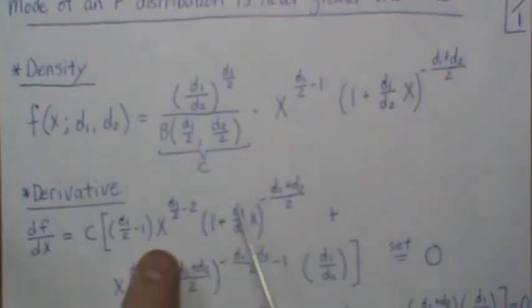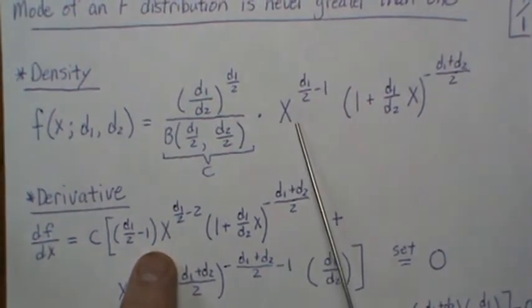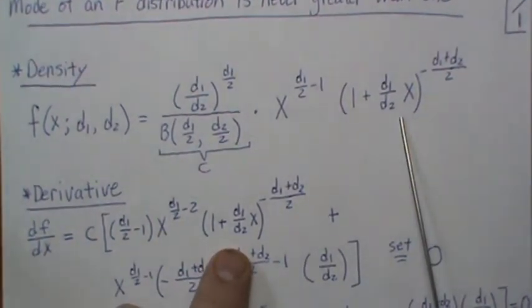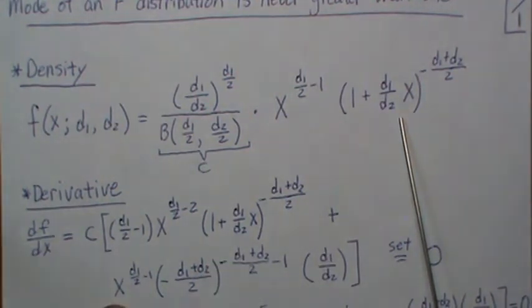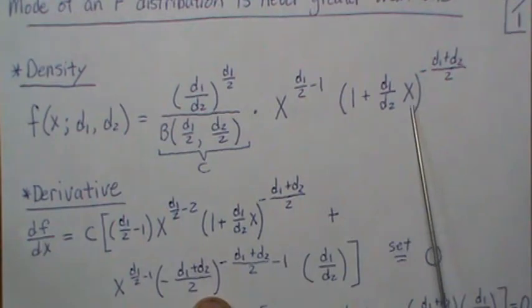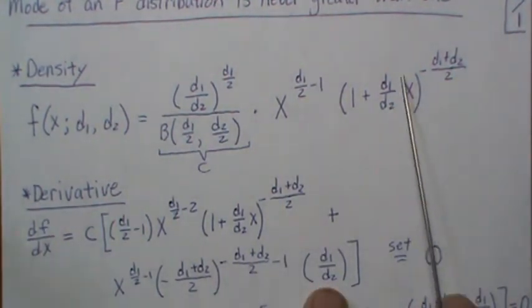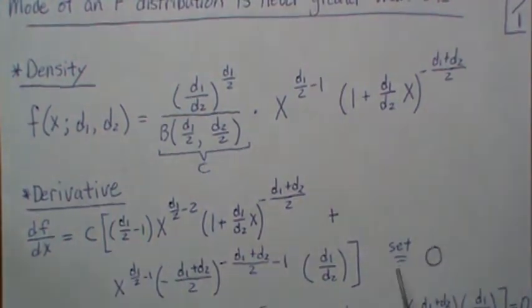So it's the derivative of the first times the second, then it's plus this first times the derivative of the second, and then this is the chain rule for this one. We set it equal to zero and we solve for X.